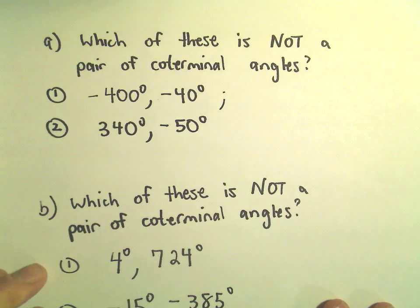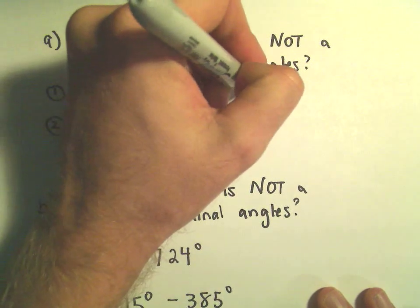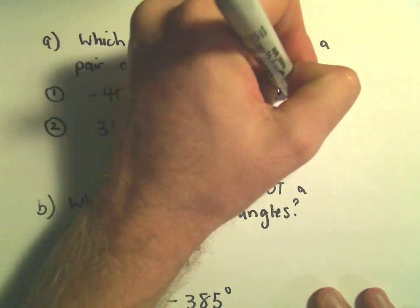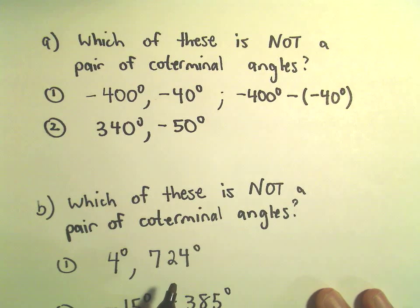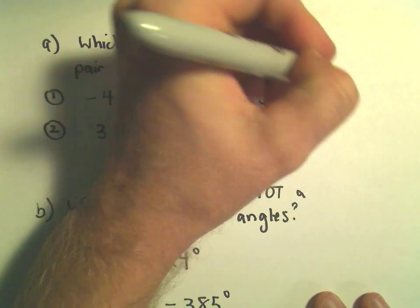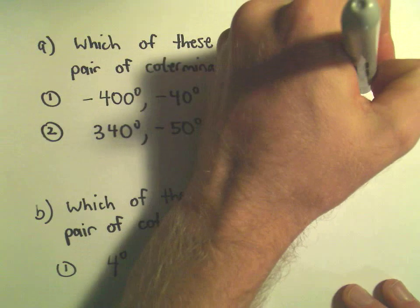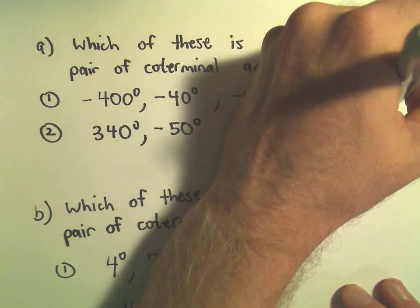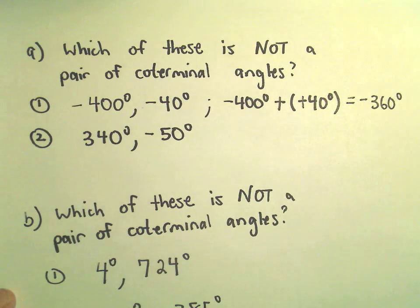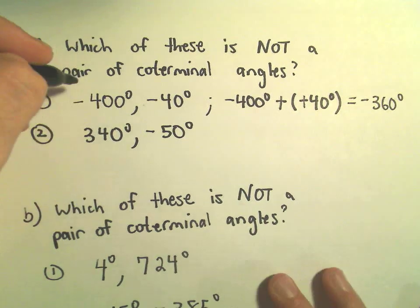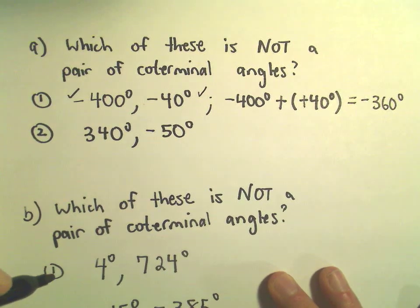So to figure out if the angles are coterminal, all I do is simply subtract them. We've got negative 400 degrees minus negative 40 degrees. Negative 400 plus 40 is going to give us negative 360 degrees. Well, negative 360 is certainly a multiple of 360, so these certainly do qualify. These are coterminal.